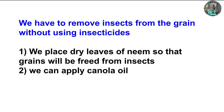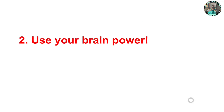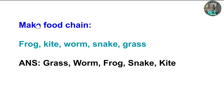The answer is: we place dry leaves of neem so that grains will be freed from insects. We can also apply canola oil. Now, use your brain power to make a food chain from the following organisms: frog, kite, worm, snake, grass.